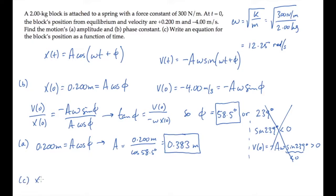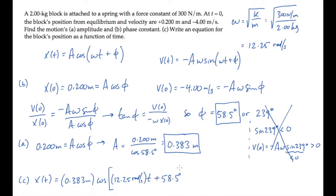Now we can solve part C, which asks for the block's position as a function of time. We just need to substitute the known amplitude, the known angular frequency ω, and the known phase constant φ. It's customary to write the phase constant in radians instead of degrees, so converting by multiplying by π over 180 degrees gives 1.02 radians.